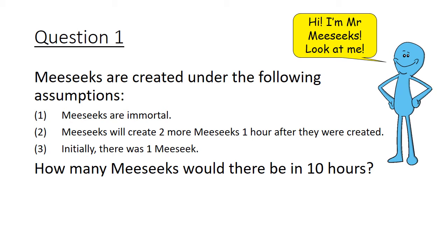Let's now dive in the world of geometric progressions with question number 1. This is also a tribute to the Rick and Morty cartoon series. In the show, we meet Mr. Meeseeks. Let's make 3 assumptions of Meeseeks. Firstly, they are immortal, they don't die. Secondly, each Meeseeks after their own creation will create 2 more Meeseeks 1 hour thereafter, and each new Meeseeks only does this once. Lastly, we begin with just 1 Meeseeks.